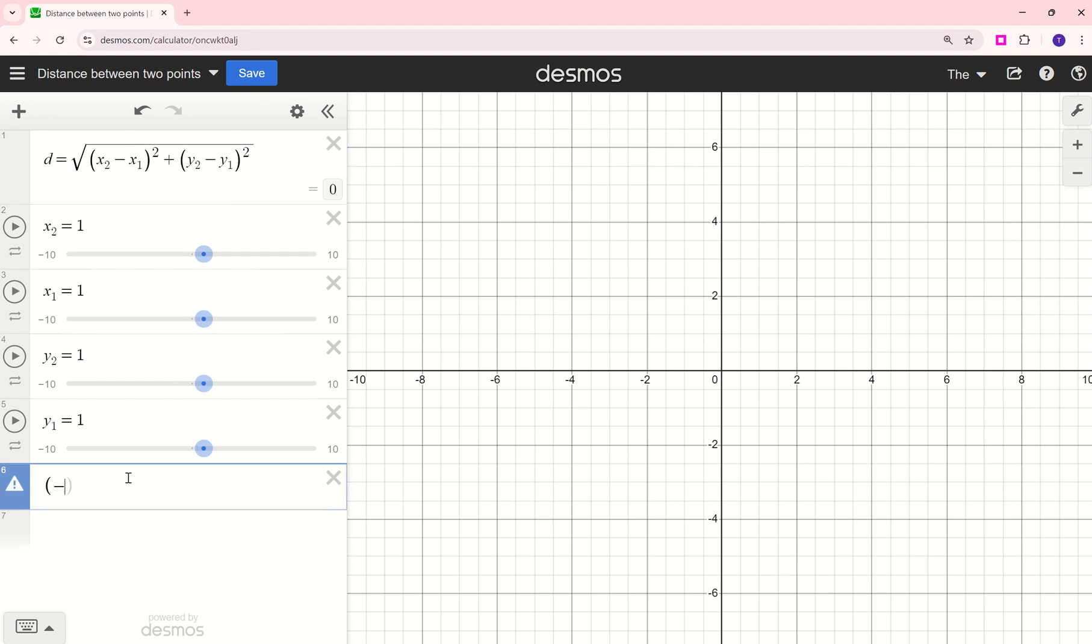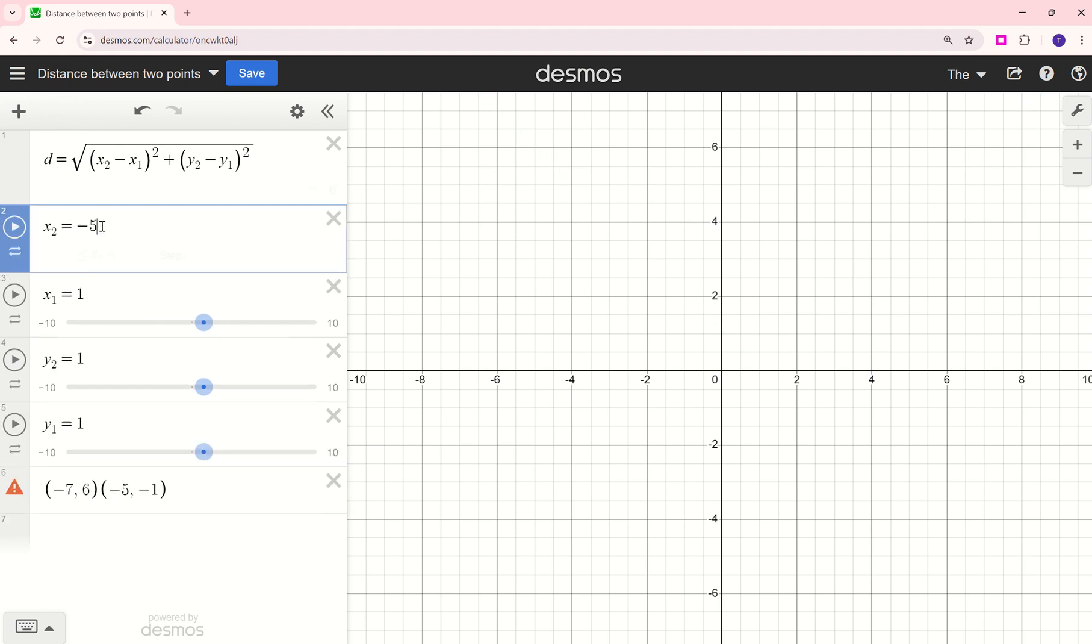I'm using the two ordered pairs negative 7, 6 and negative 5, negative 1. You don't have to type them here, that's just for my reference. So my second X value, here's my second ordered pair, this is the X value, so it's negative 5.